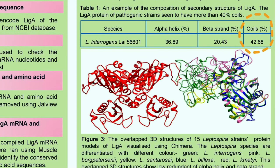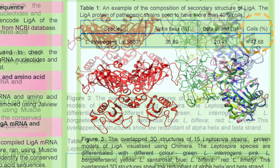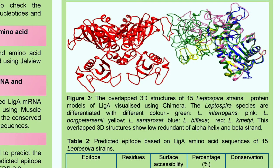Table 1 shows the composition of secondary structure of LiA from 50 strains, showing that the major portion of LiA protein tends to adopt a coil conformation. According to Enel and Schmell, random coils tend to undergo changes throughout evolution as they are more flexible than alpha helix and beta-pleated sheets. This figure shows the overlapping tertiary structures of LiA. Based on the overlapping figure, there is low redundancy of helix and strand. From the analysis, the percent identity of LiA from the five Leptospiral species ranges from 62 to 67.